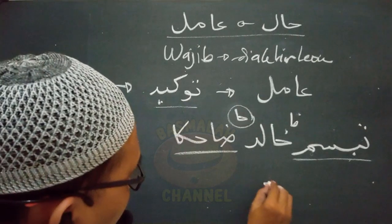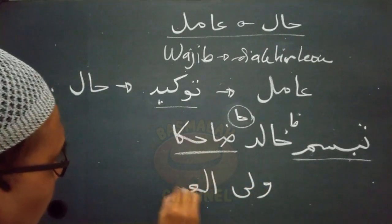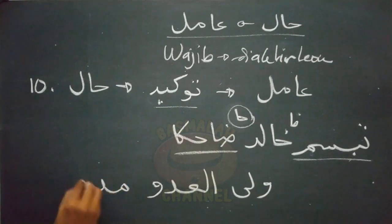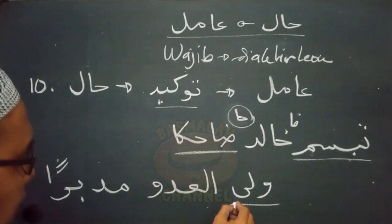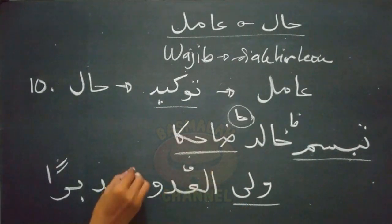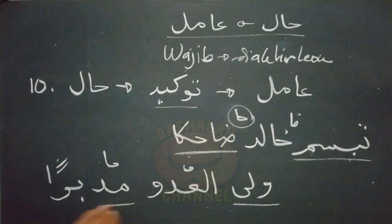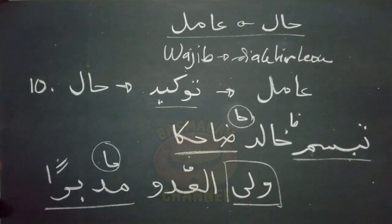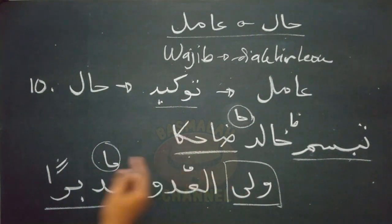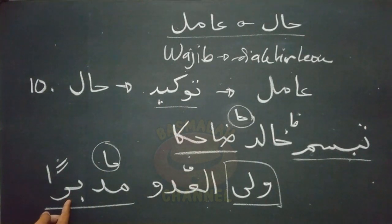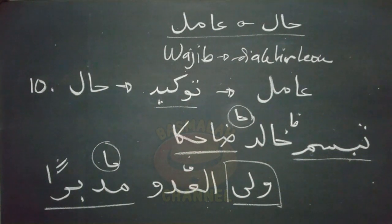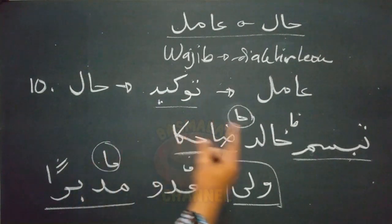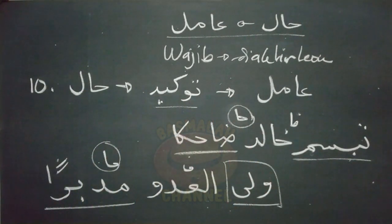Contoh lain seperti lafad 'wallahu al-'aduhu mudbiron': demi Allah melarikan diri musuh padahal mundur. Lafad 'mudbiron' merupakan hal yang keberadaannya sebagai penguat dari lafad 'walla' yaitu amilnya. Ketika musuh melarikan diri, dikuatkan dengan kata 'mudbiron' yang memberikan pernyataan bahwa mereka melarikan diri dalam keadaan mundur. Oleh karena itu keberadaan lafad 'mudbiron' sebagai hal tidak boleh didahulukan dari amilnya. Tidak boleh kita katakan 'mudbiron walla al-'aduhu'.